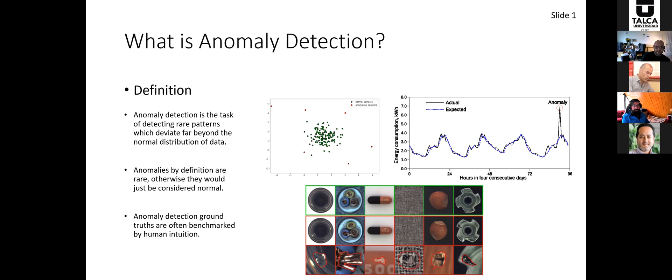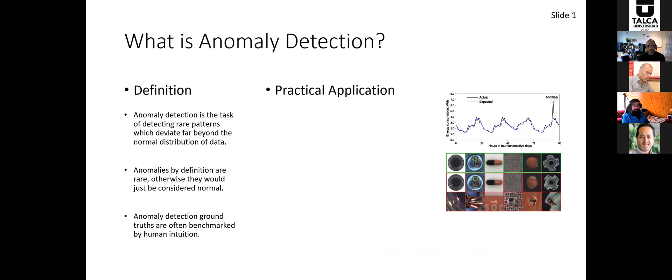I'm mentioning these three parts of the definition because we're going to address almost all three of them at some point. But first I'd also like to talk about some practical applications of having software that can detect anomalies. One that's very common and popular would be predicting anomalies within the stock market within a time series.